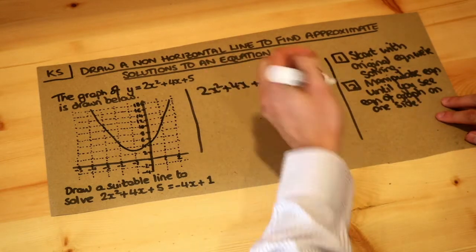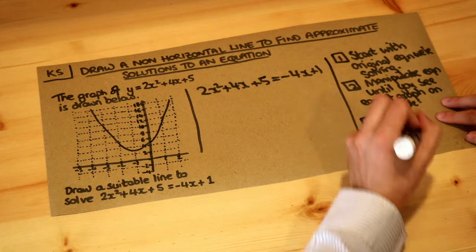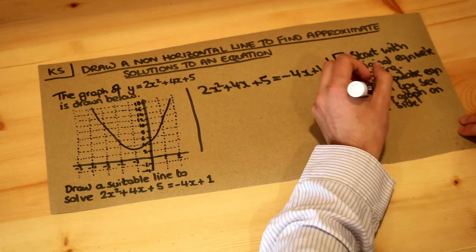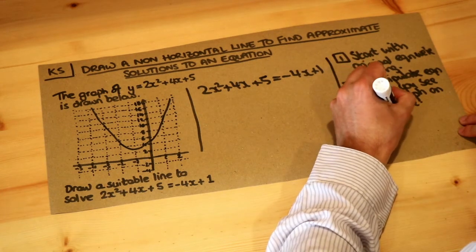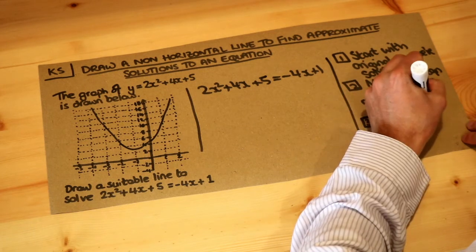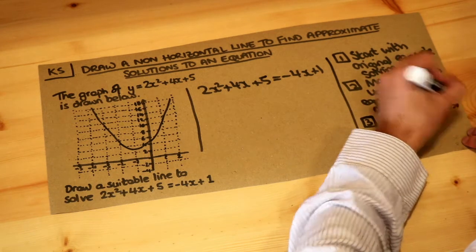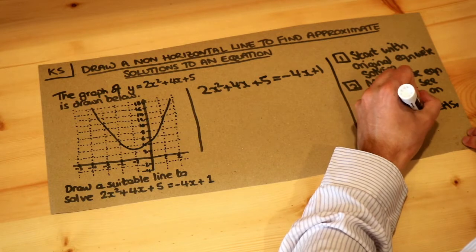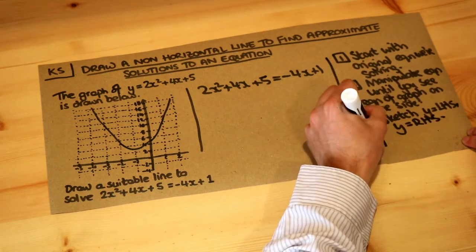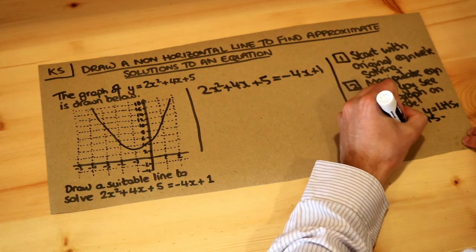Step 3 is to sketch each side of the equation, so we sketch y equals the left hand side of our equation and y equals the right hand side of our equation. Then finally, you read off the points of intersection.